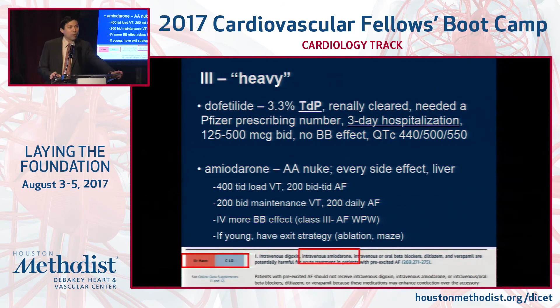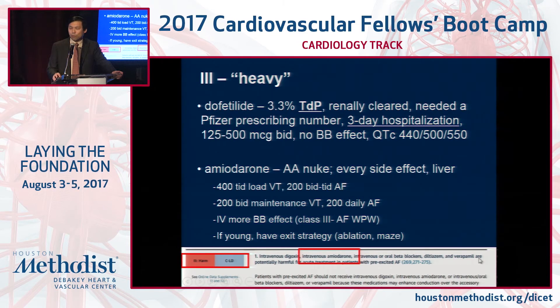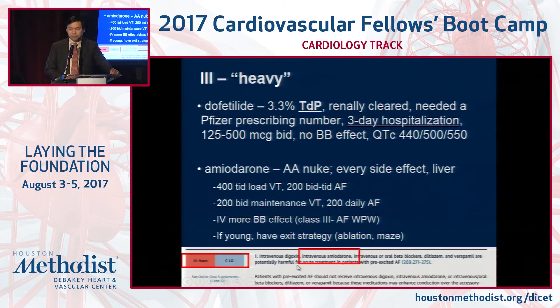The 2015 guidelines clump IV amiodarone with digoxin, beta blockers, diltiazem, and verapamil as harmful in AFib with WPW, because it has a little more of that beta blocker effect.